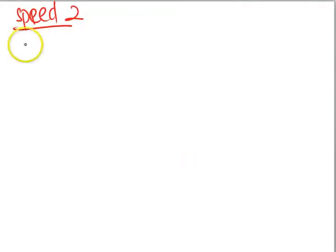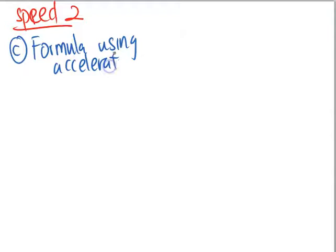This involves acceleration, so that's why I put this slide after the acceleration. What's the formula here? We talked about, for part C, we talked about formula using acceleration. The formula as I've seen just now, it is A equals to V minus U over T.